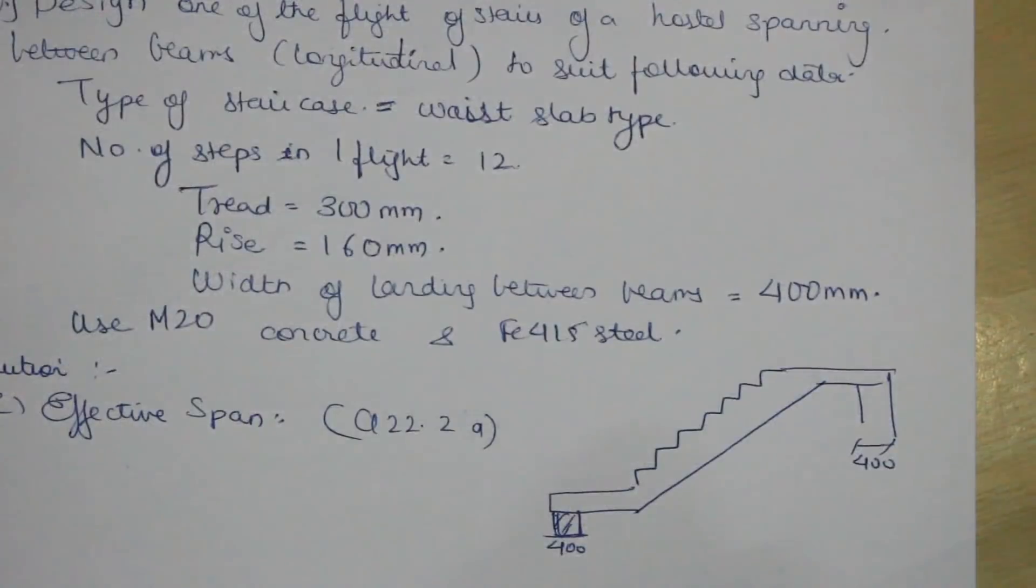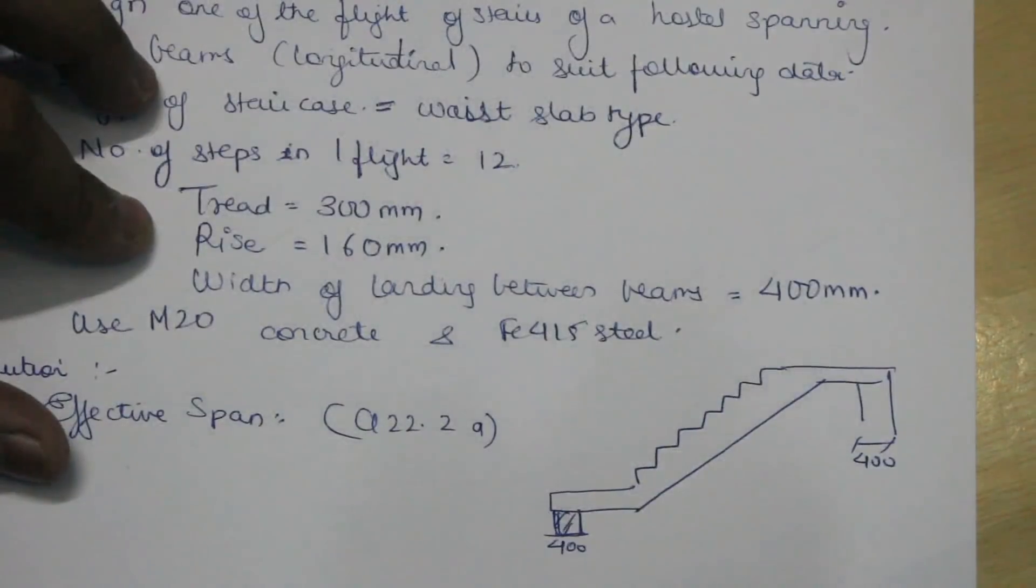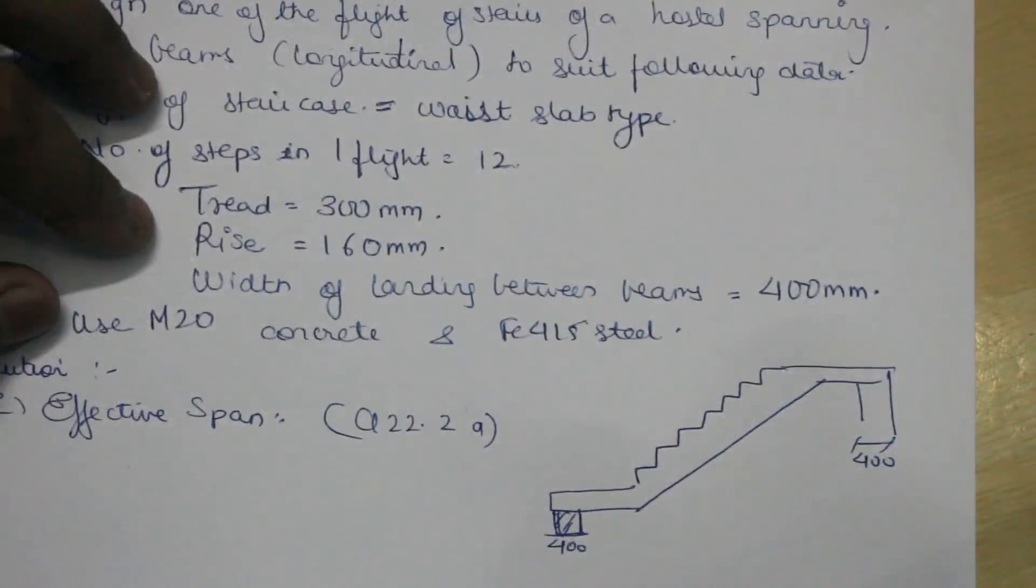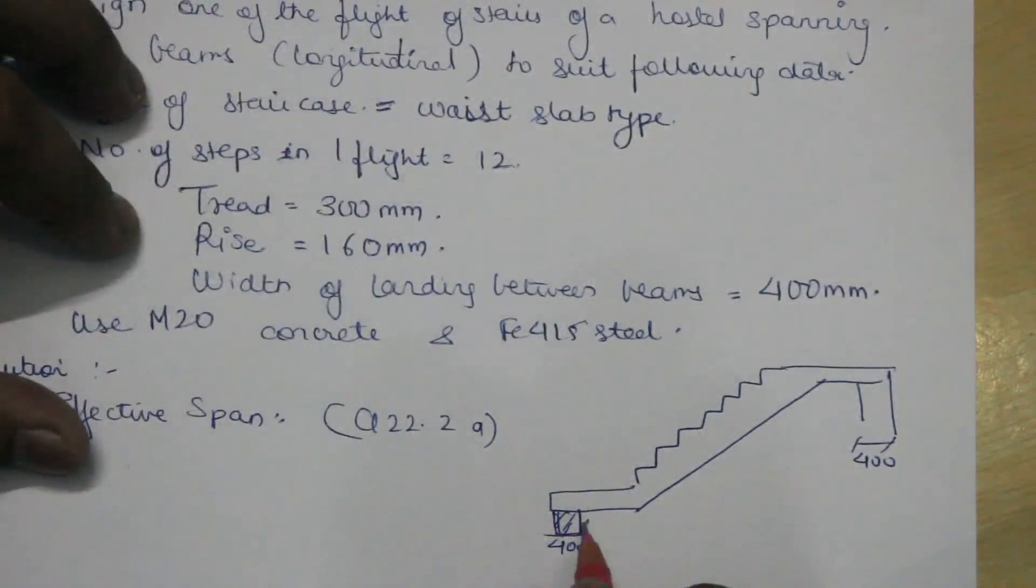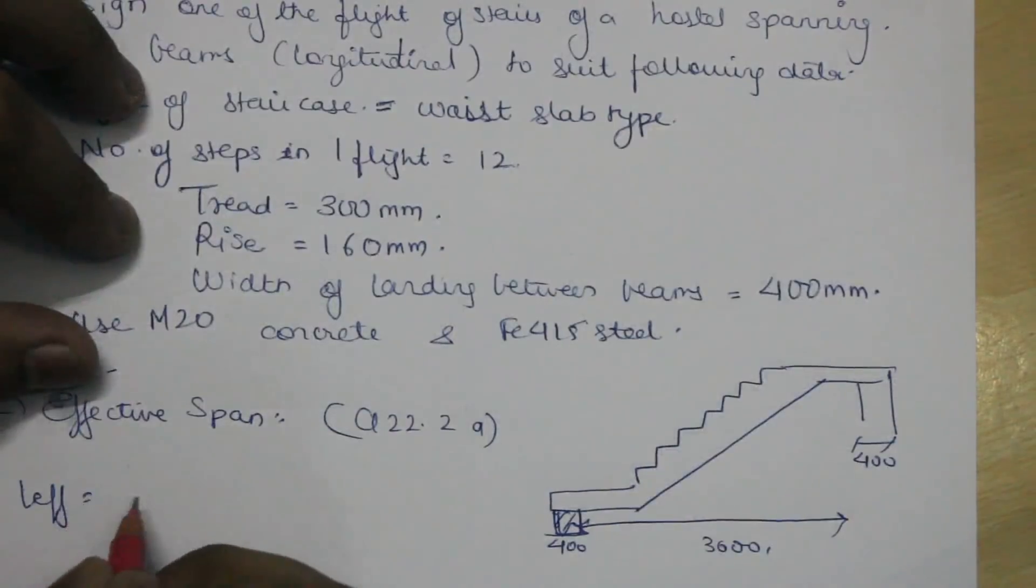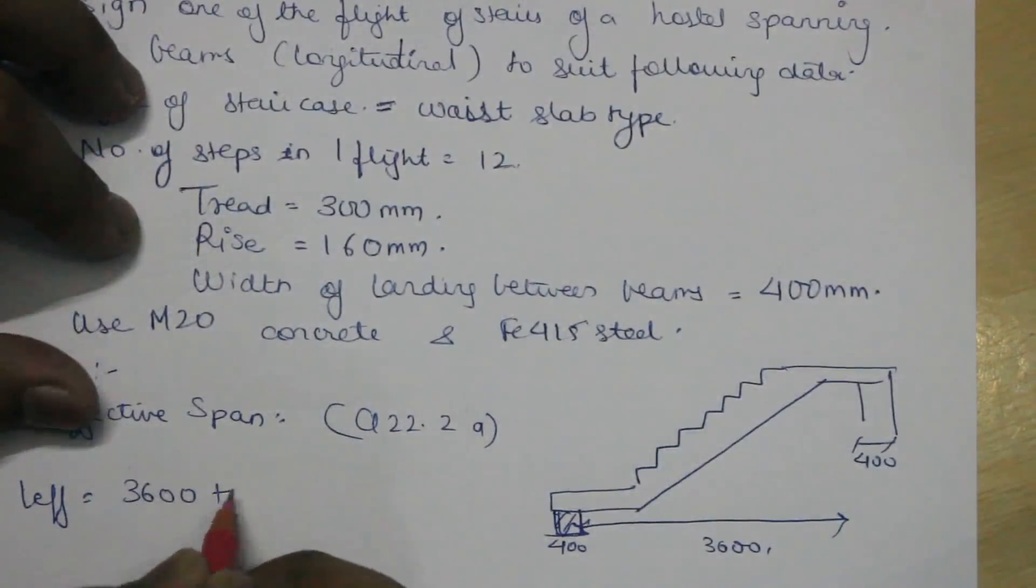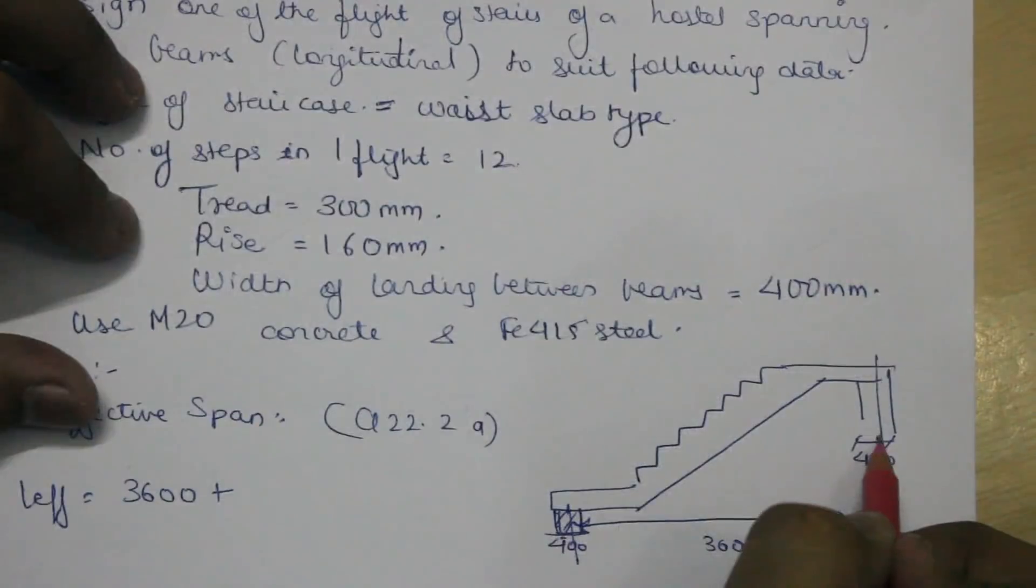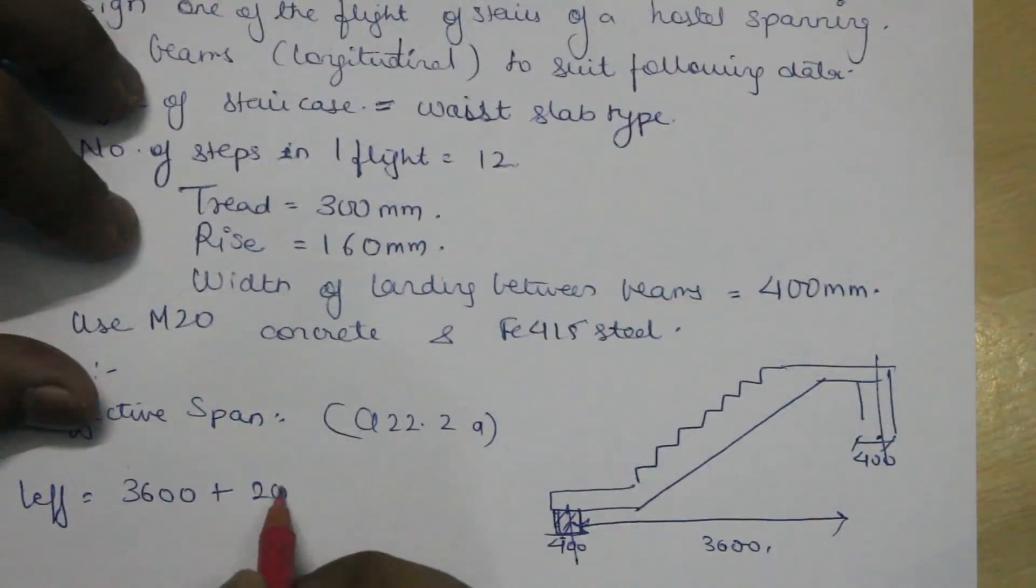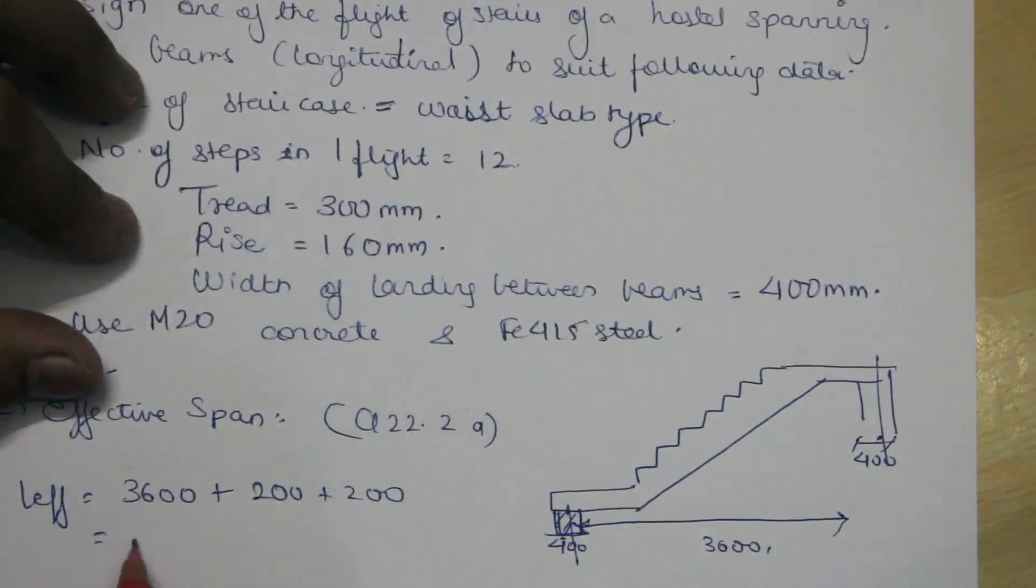Number of treads is 12, so our going will be 12 times 300 mm which is 3600 mm. The effective span is the center to center distance between the supports. This is our going 3600, so L effective would be 3600 plus 200 mm from this side and 200 mm from this side, so the effective span would be 4000 mm which is equal to 4 meters.